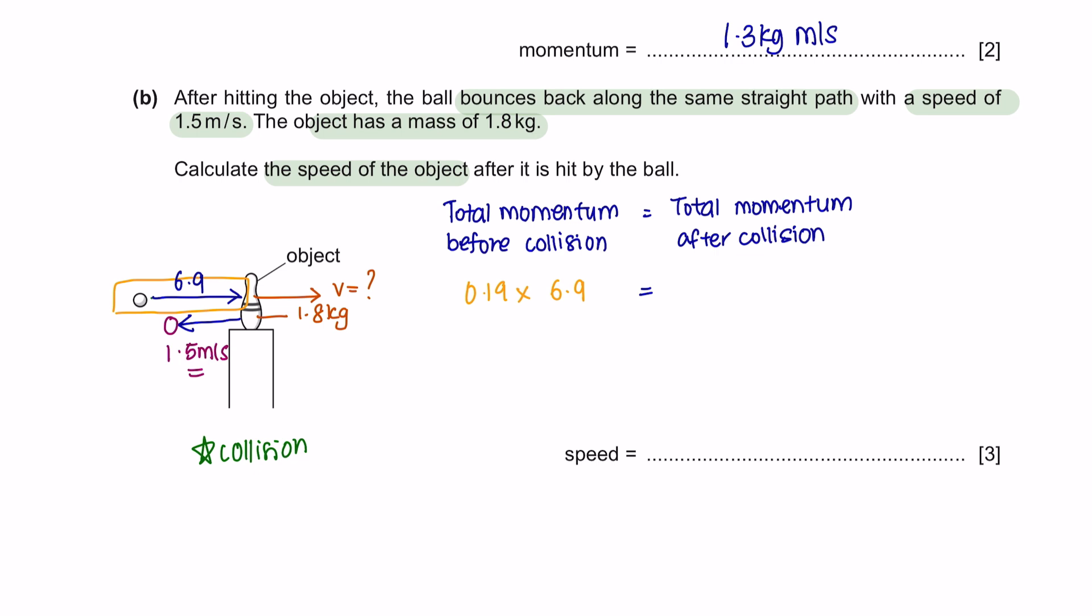So let's first calculate the total momentum before collision, which is the mass of the ball multiplied by its velocity before the collision, which was 6.9 meters per second. So the total momentum after collision would be the object moving in this direction after the ball hits it. And don't forget to add up with the momentum of the ball bouncing back in the opposite direction. So let's first calculate the momentum of the ball moving in the opposite direction. The ball has the same mass of 0.19 and multiplied by its velocity. It states here that the velocity is 1.5 meters per second. However, it is traveling in the opposite direction. Initially it was moving in this direction, meaning that this is a positive direction. If it is moving in the opposite direction, the velocity now will be in a negative value. So you have to multiply by negative 1.5.